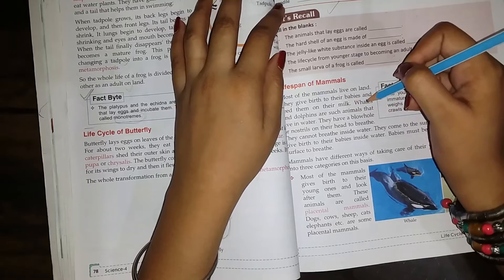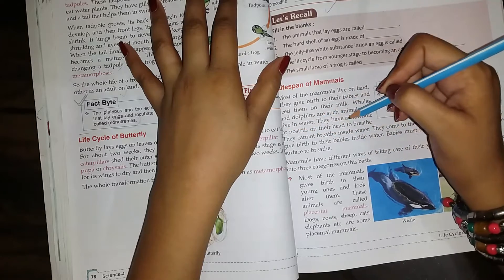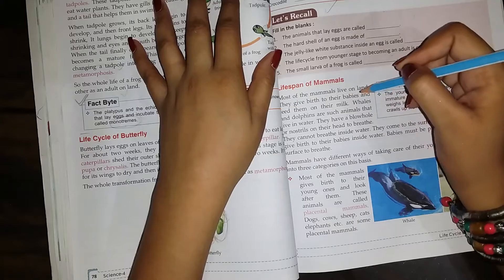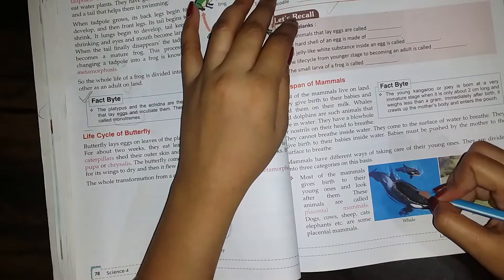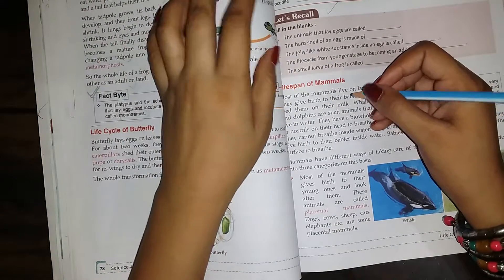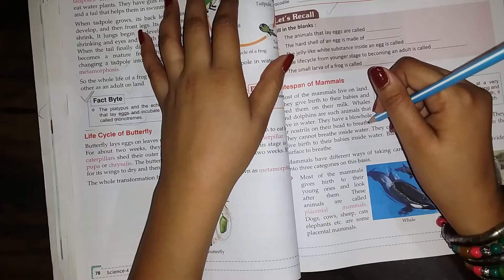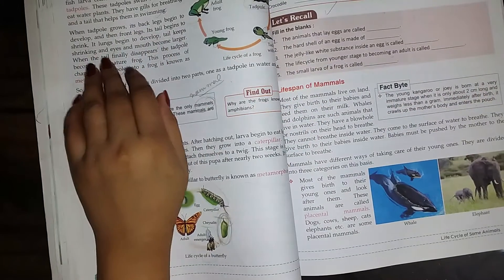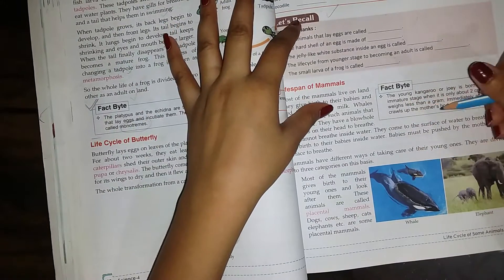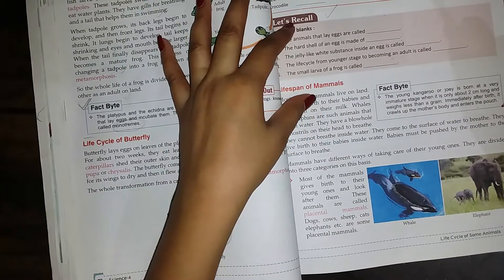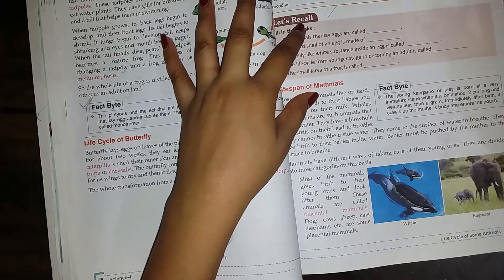Whales and dolphins are such animals that live in water. They have blow holes or nostrils on their head to breathe. They give birth to their babies in the water. Babies must be pushed by the mother to surface to breathe.